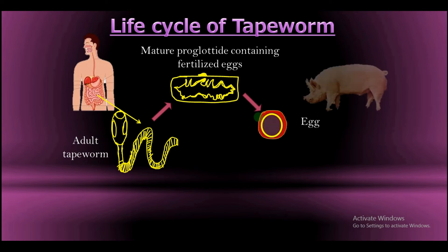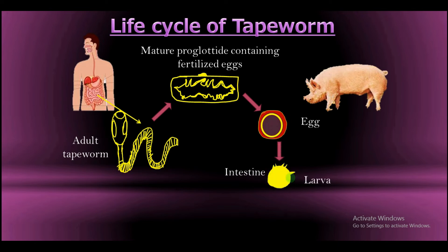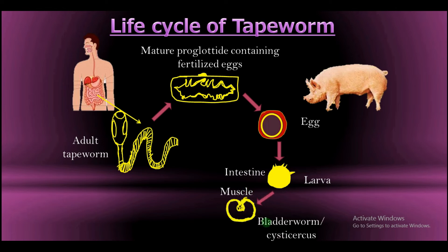When a pig feeds on food in the soil that contains these fertilized eggs, they are automatically taken into the body of the pig. When the eggs get to the small intestine of the pig, they hatch to produce the larva. From this stage, the larva migrates through the wall of the small intestine to the muscles of the pig, where it develops a cyst around itself to form the bladderworm, which is also known as the cysticercus.